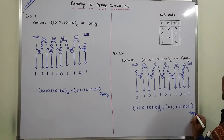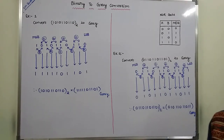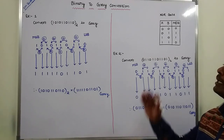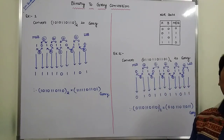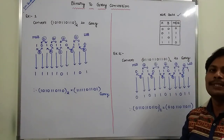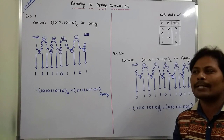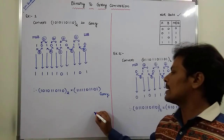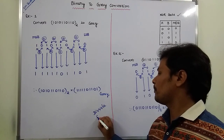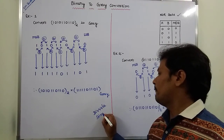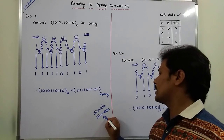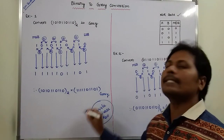So this is the equivalent grey code number. To perform the conversion from a given binary number into an equivalent grey code number, we have to use the XOR gate operation. Thank you for watching this video. If you like this video, please subscribe to my channel and share it with your friends and classmates.